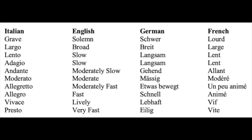Here we see a number of different tempo markings. First we see the Italian words, which are the most common way that we see them in music. Then we have their English translations. Beside them we also have German and French words, because if music was made in Germany, oftentimes the instructions are in German, or if it was French, in French. Italy, Germany, and France are really the center of the musical world in Europe.